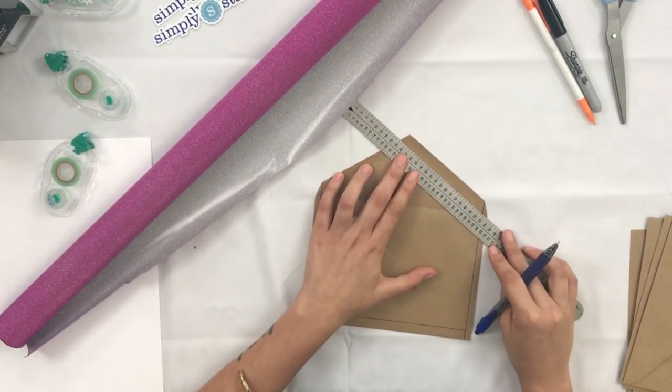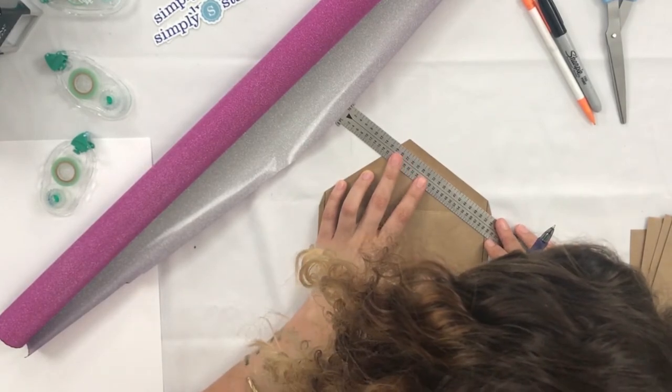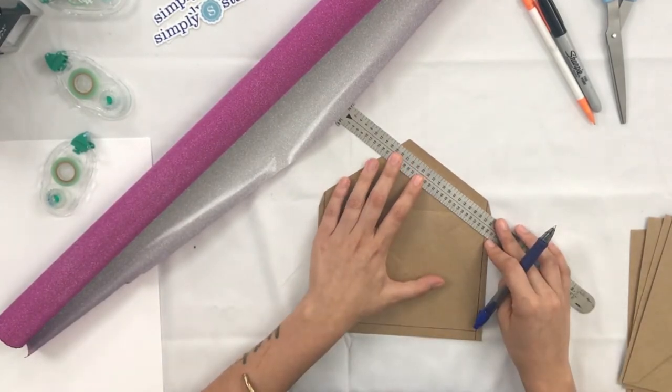And then for the top part or the flap of your envelope you're going to want to draw just outside of the adhesive.